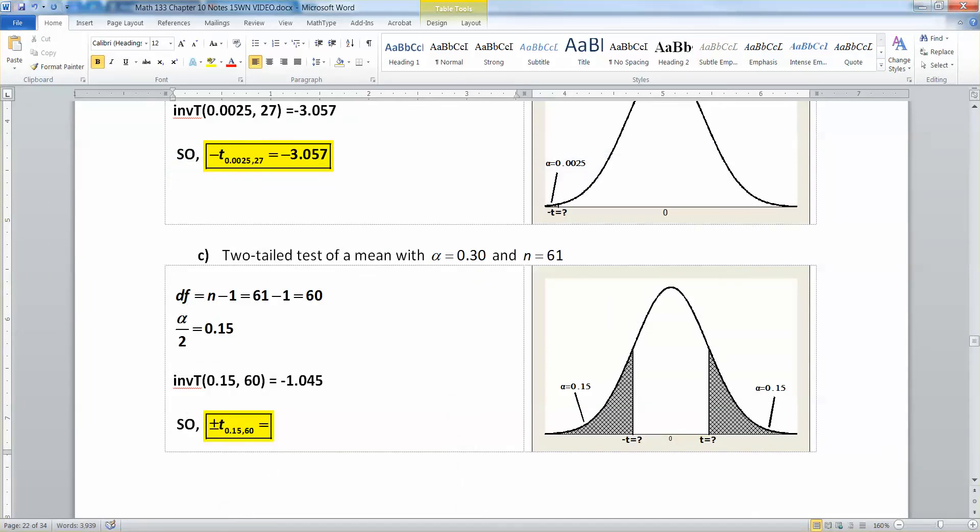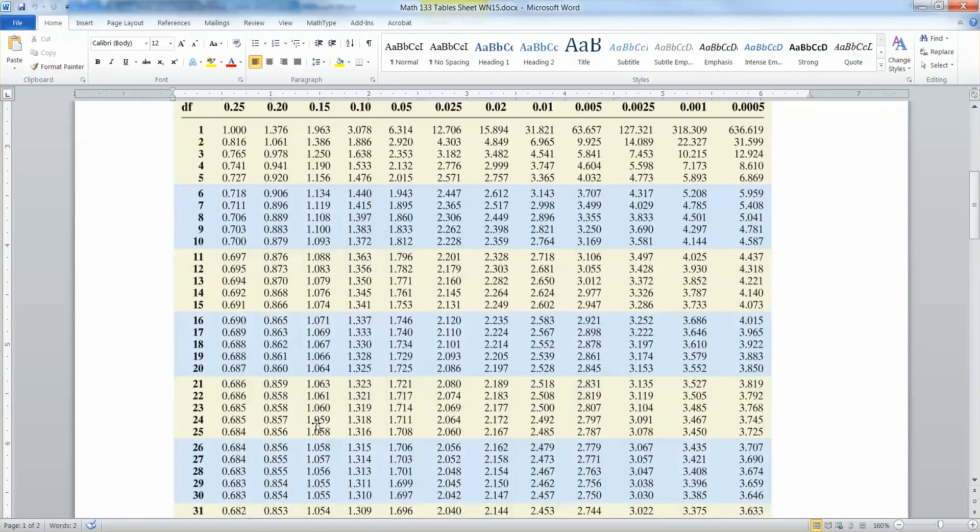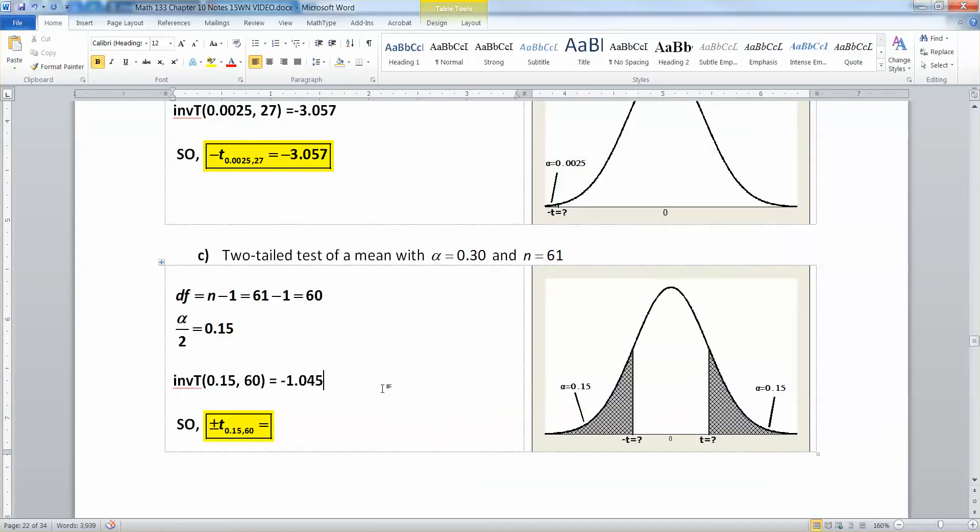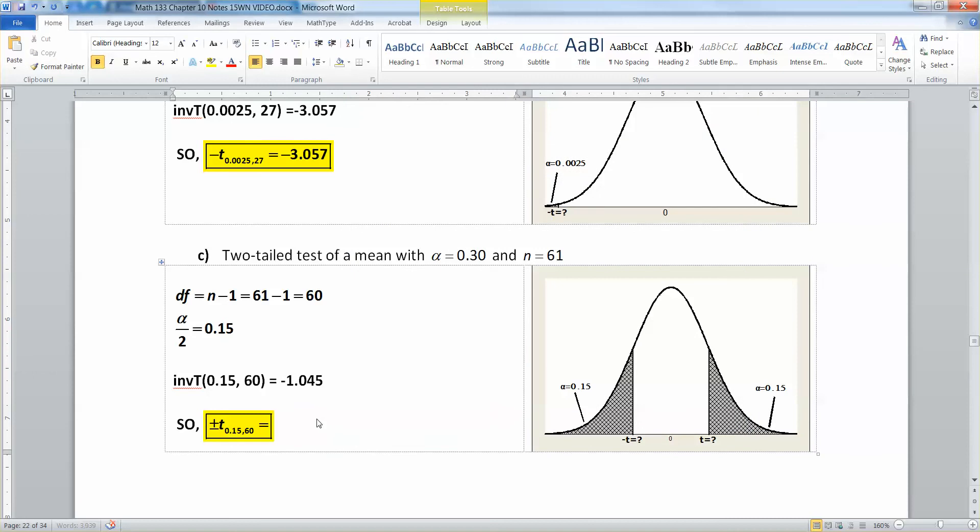And just for fun, let's go look at it in the table real quick. It's the 0.15 column, drop to 60, and there it is, 1.045. So this means that we have plus or minus 1.045 as our two critical values. We need both of them because it's a two-tailed test. You have one on the left and one on the right. And so you have to find both of them. But honestly, when you found one, you've sort of found the other, at least with a T distribution, just like with a Z distribution.